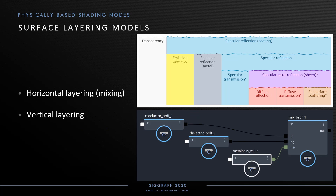In order to construct more complex shading models from these BSDF nodes, we need layering, so atomic BSDFs can be combined to form multi-layered materials. We differentiate between horizontal layering and vertical layering. Horizontal layering is a statistical mix of two BSDFs — for example, mixing between a conductor layer and a dielectric over diffuse layer, where the mixing weight controls the metalness. To describe this, we extended the standard MaterialX mix node to support the BSDF type.